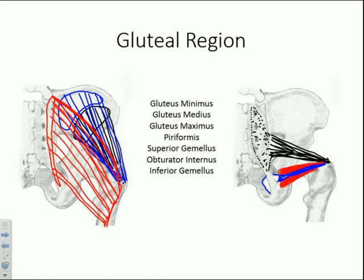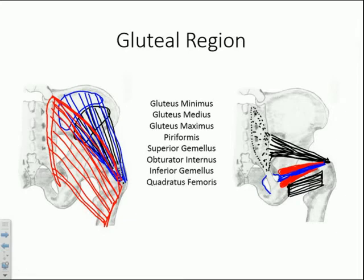The final muscle is quadratus femoris, which comes off the lateral border of the ischial tuberosity. As the name implies, it's a square-shaped muscle that attaches to the posterior aspect of the femur at a spot appropriately named the quadratus tubercle. It's noticeable because of its square appearance relative to the other muscles.